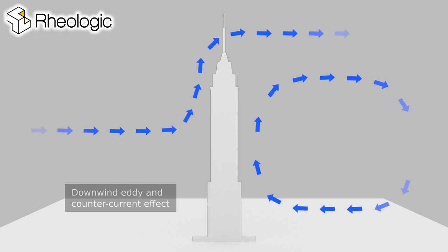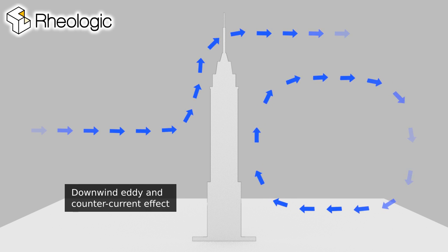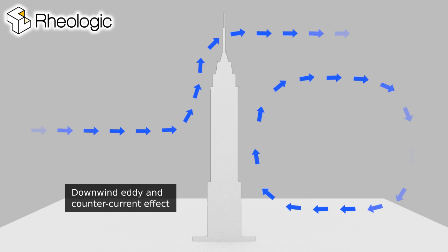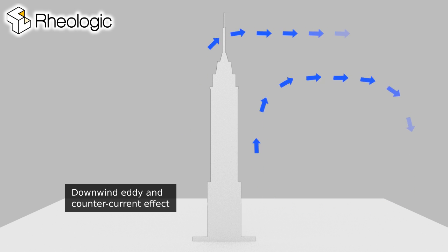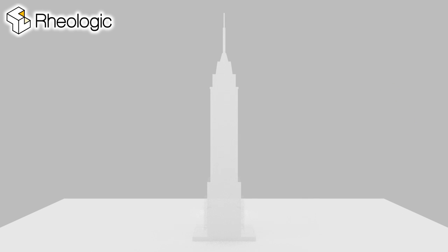When we look to the downwind side of buildings, we often see a wake of large revolving eddies. They create counter-currents at ground level.